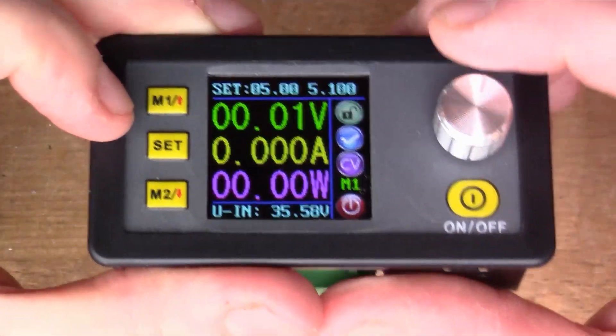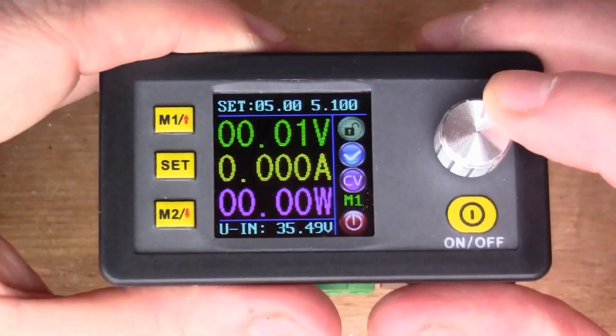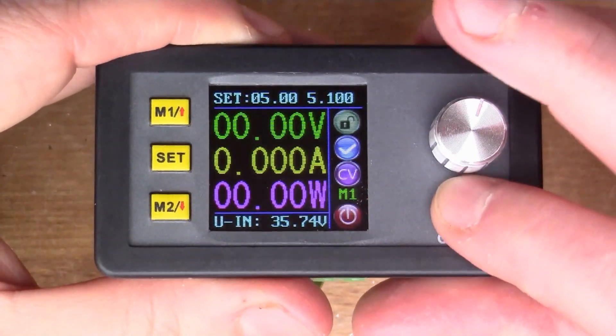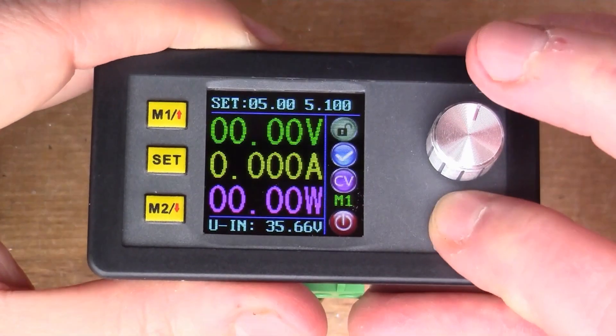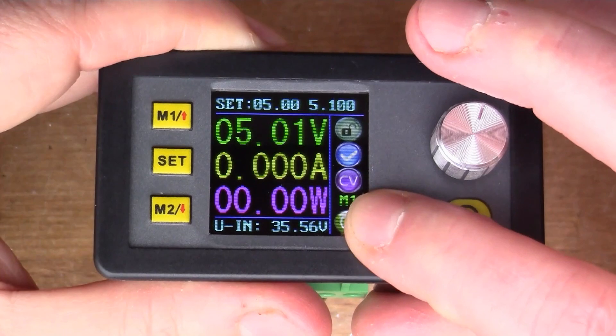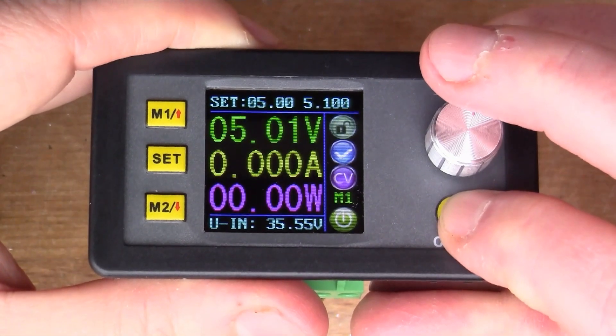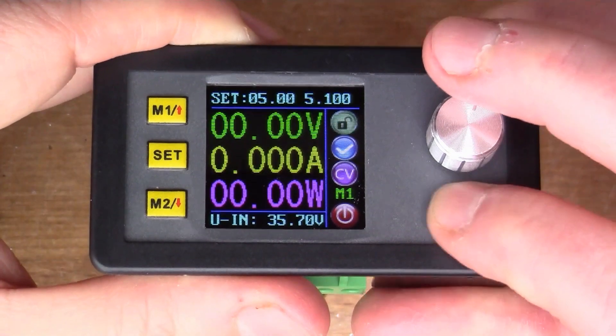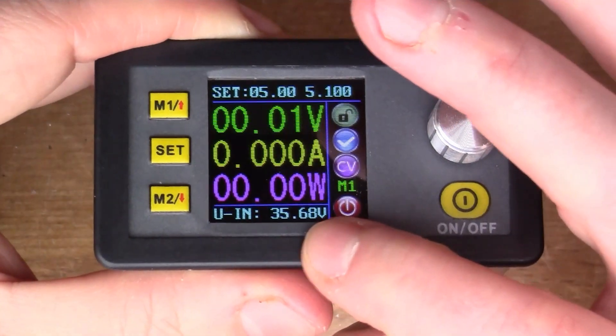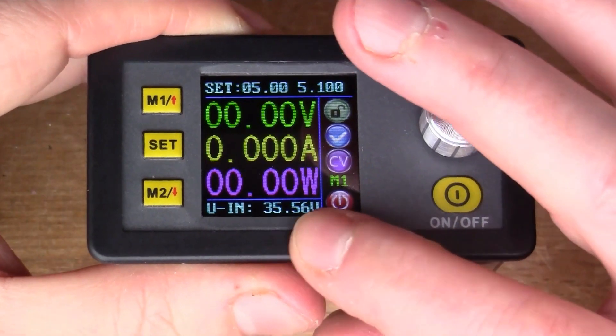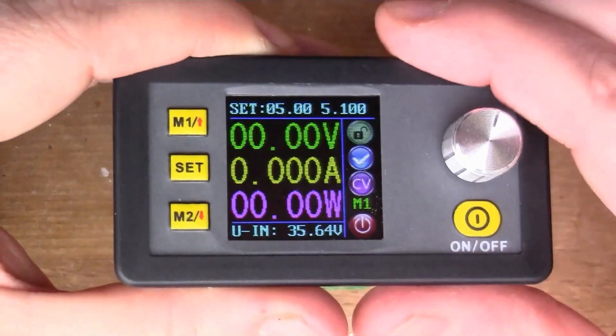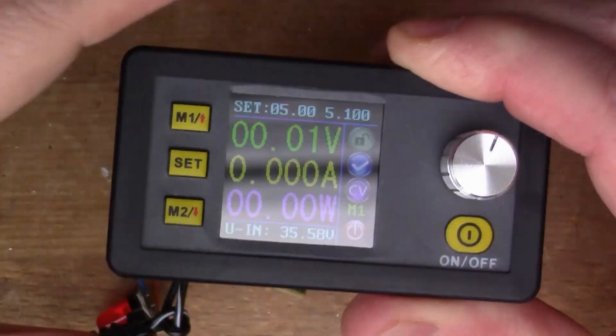And so you've got this button, which is the soft on-off. You see that green light on the display comes on to show you that the power output is on. So at the bottom there you've got the voltage coming in. So we've got nearly 36 volts coming in from this external power supply.